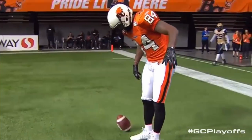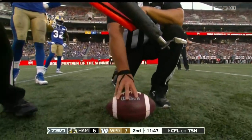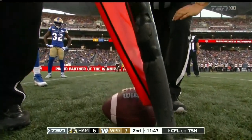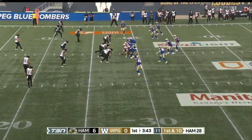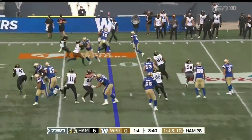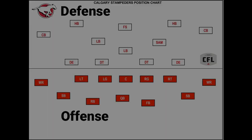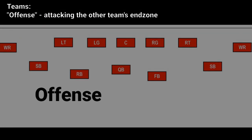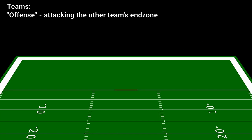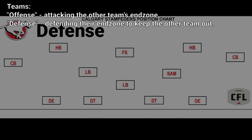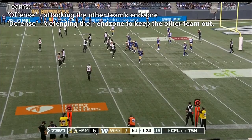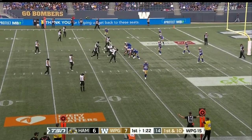First things first, as you're likely aware, this is a ball sport. Here is what that ball looks like. Two teams play against each other with 12 players on the field. Each player takes a spot on the field and they each play a specific role for their team. The team with the ball is called the offense — they are attacking the other team's goal area, called the end zone. The team without the ball is called the defense. They are trying to keep the other team from getting the ball in their end zone, and if possible, getting the ball back from them.